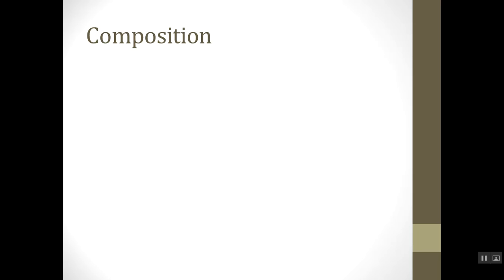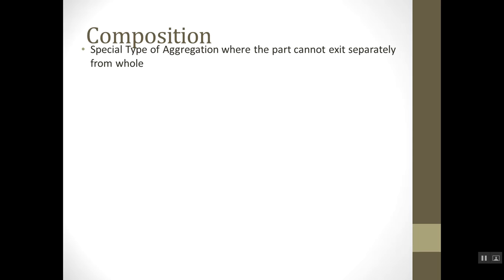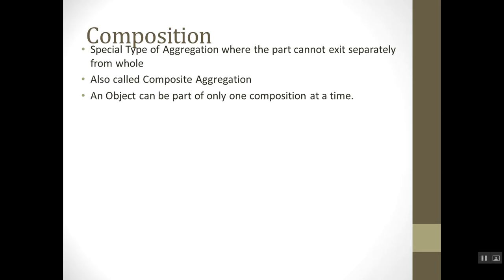Another type of association is composition. It is a special type of aggregation where the part cannot exist separately from the whole. In our previous example, a wall could exist independently from a room, but in composition, the part cannot exist independently. Composition is also called composite aggregation.